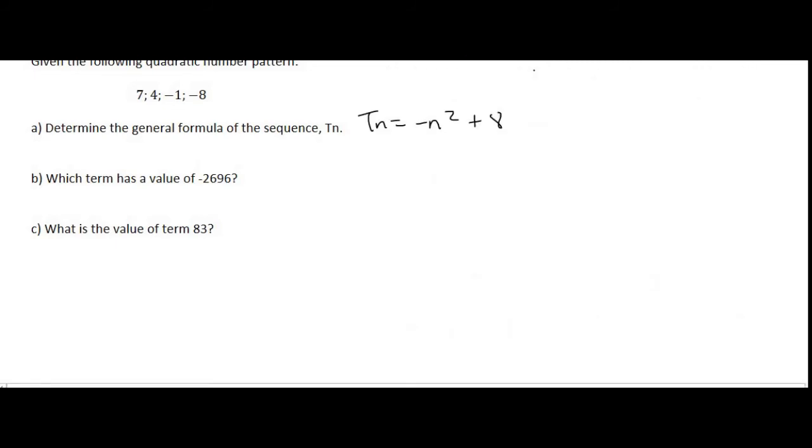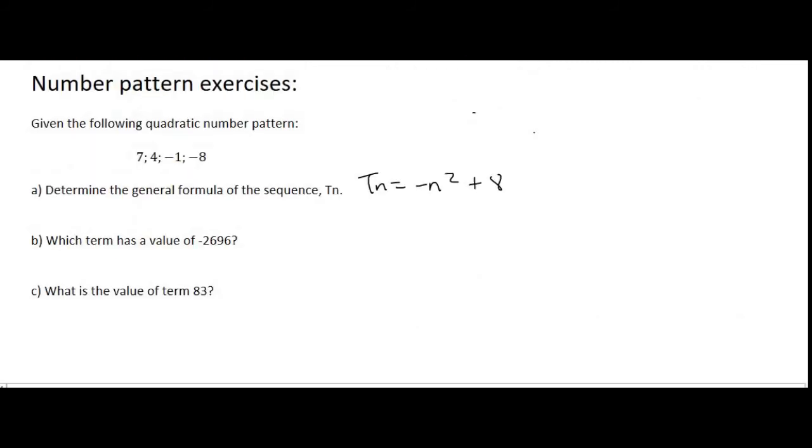Question B says, which term has a value of minus 2696? So we always need to be careful of, are they asking us for the position or the actual value? Here they are asking us for the actual value. And so that is the value of TN. Whereas if they were asking us for a position, then that would be N. And so we will sub minus 2696 equals to minus N squared plus 8.